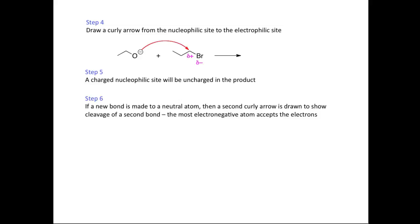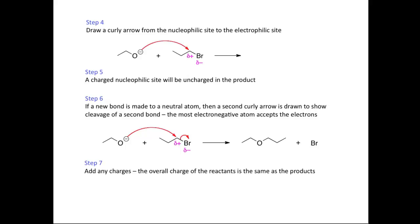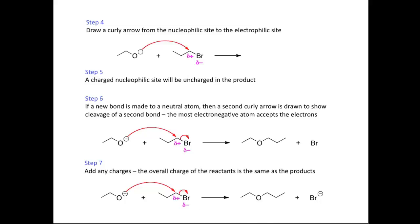In step six, we draw a second curly arrow to show cleavage of a second bond. The electron density moves from the carbon-bromine bond onto the most electronegative atom bonded to the carbon, which is bromine, giving us our two products. In step seven, the reactants have one negative and one neutral charge overall. The negative charge goes on the bromine, which acts as our leaving group and accepts the electron density, so Br minus is the second product.